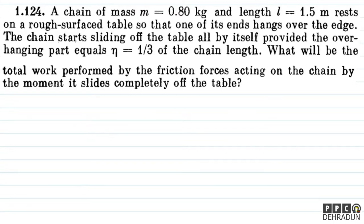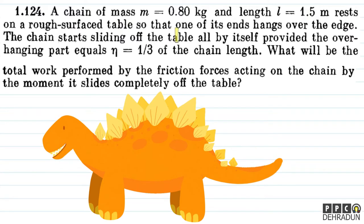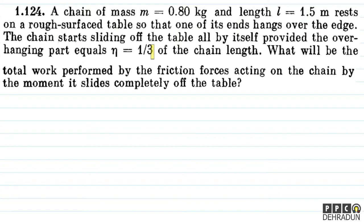The question says: a chain of mass m = 0.8 kg and length l = 1.5 meters rests on a rough-surfaced table so that one of its ends hangs over the edge. The chain starts sliding off the table all by itself provided the overhanging part equals eta = 1/3 of the chain length. What will be the total work performed by the friction forces acting on the chain by the moment it slides completely off the table?